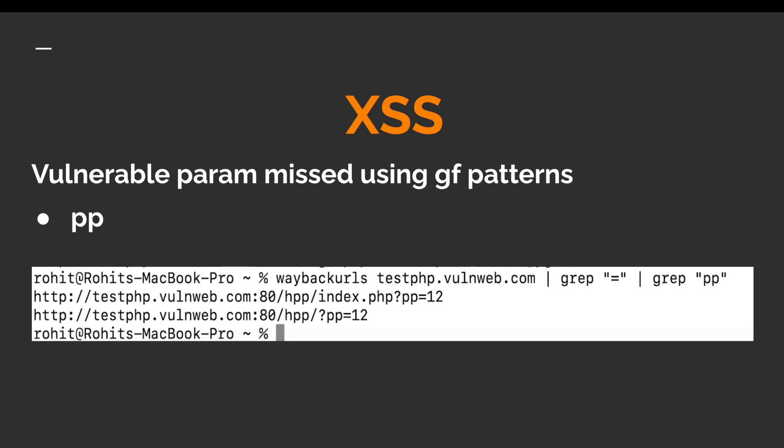Another limitation: if a web developer becomes aware of GF patterns, they can go to the GitHub repo, see the keywords and parameters listed for XSS, LFI, etc., and simply never use those parameter names in their web application. This means GF patterns won't identify anything, because it does pattern matching based on keywords written in its JSON file — leading to false positives or missed critical vulnerabilities in the web application.